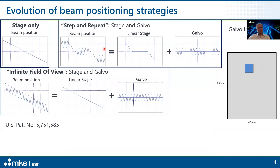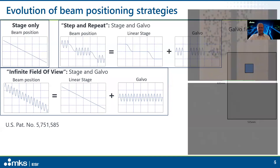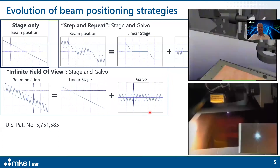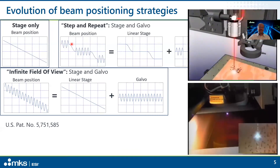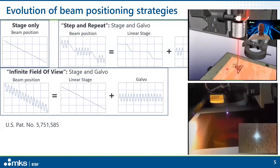A refinement of the step and repeat process is what is now done with infinite field of view, where you combine the motion of the linear stages and galvo in parallel by synchronizing and calibrating them to each other. Our patent has recently expired, so now this is becoming much more widespread. The key benefit is that you no longer spend any time on the transitional period from one scan field to another, but can continuously process.